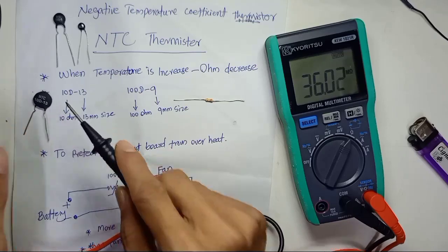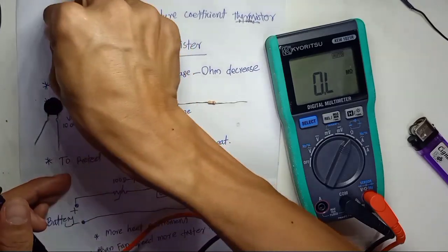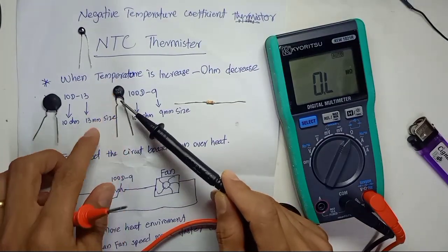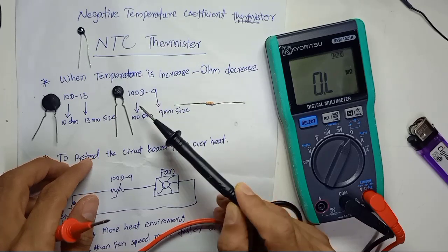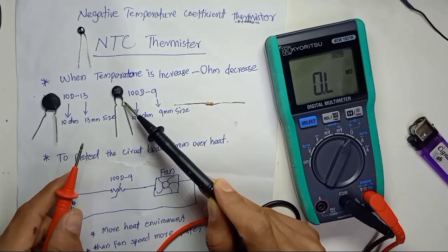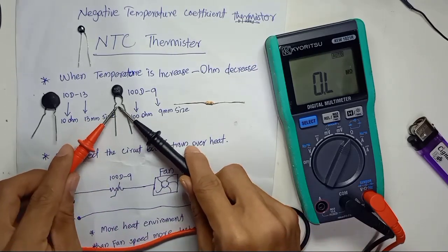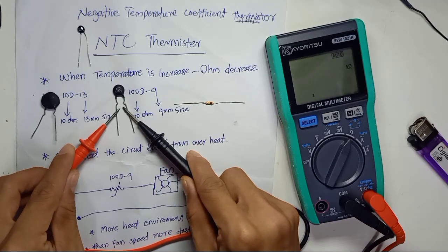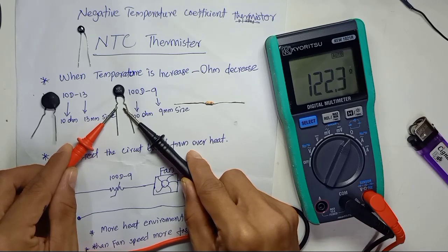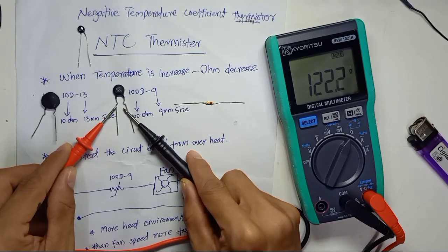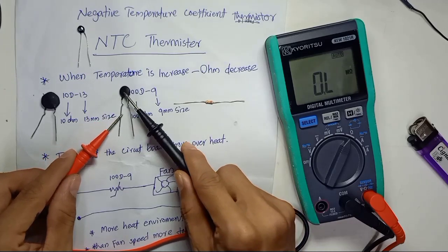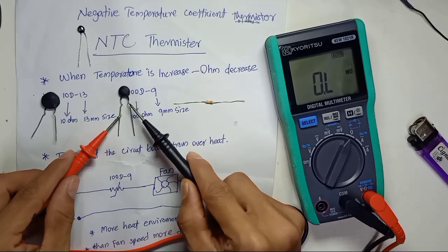Now the other one is the 100D-9: '100' means 100 ohms and '9' means 9 mm diameter, so it is smaller in size. Measuring it we get 122 ohms — within the plus-or-minus tolerance of the rated 100 ohms.